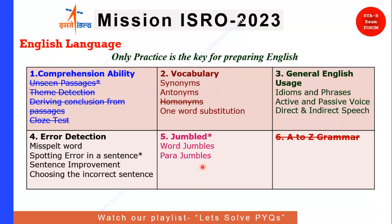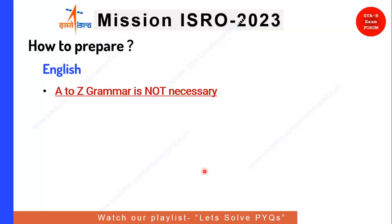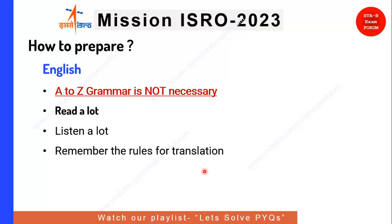How to prepare the English section? You need not cram up A to Z grammar — that is not necessary. The only solution is to read a lot and listen a lot, which will improve your English pronunciation and reading habits. Always remember the rule of translation, which will be very beneficial for active-passive and direct-indirect. Practice is the only key for English, and you cannot run away from this section without practice.